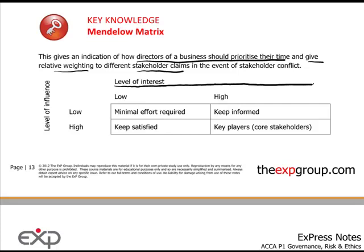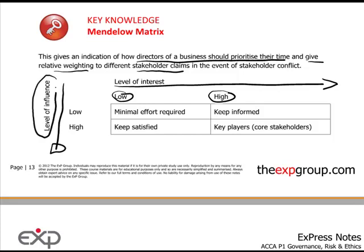On one graph, the Mendelow Matrix plots the level of interest from low to high — low on one side, high on the other — representing stakeholders' interest in the business. The other axis goes from low to high representing the level of influence that a stakeholder has over the business. If somebody is of low influence and low interest, then as a director you would logically put minimum effort into looking after those stakeholders.